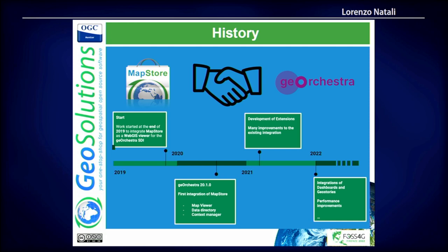This afternoon, I'm going to tell you a story about the collaboration between MapStore and GeoOrchestra. GeoOrchestra is an SDI that integrates GeoServer, MapStore, GeoNetwork, and many other tools. The collaboration started in 2019, and we wanted initially to integrate the WebGIS viewer of MapStore in the GeoOrchestra SDI. We delivered the first official integration in 2020, and it gave us a lot of good things in MapStore too.